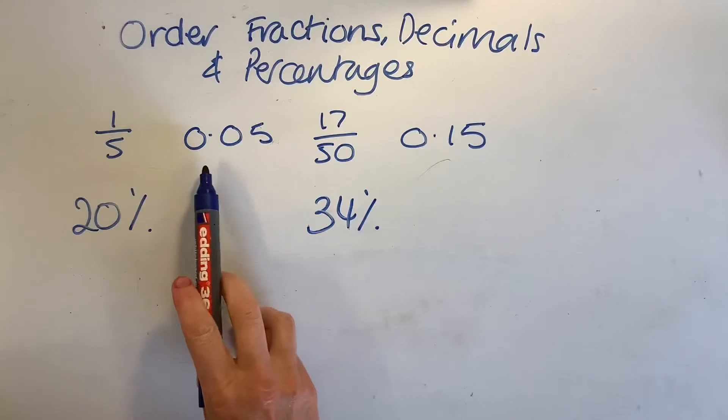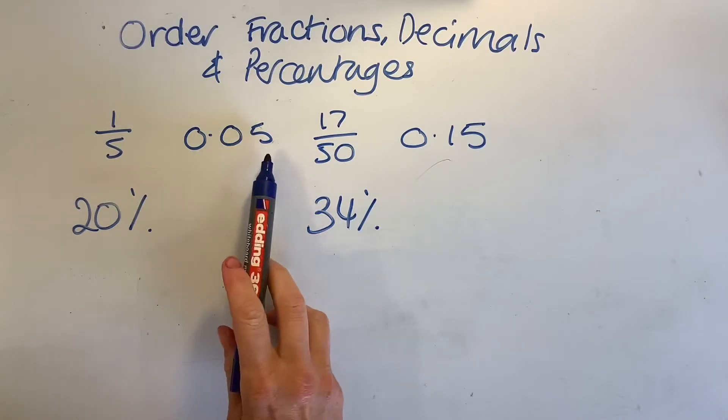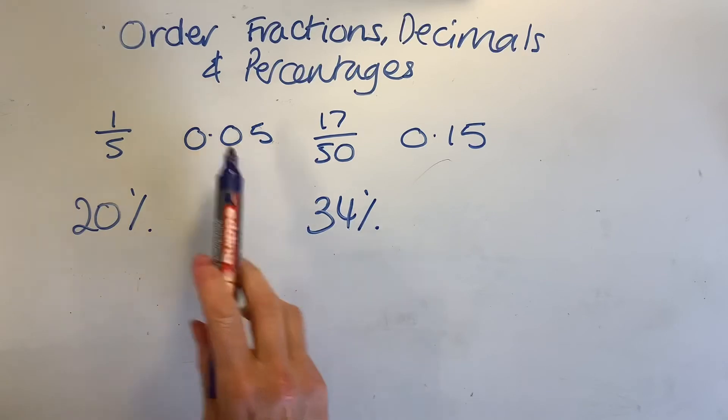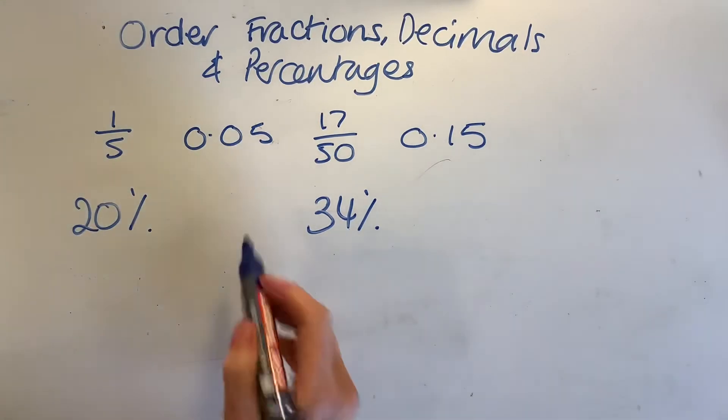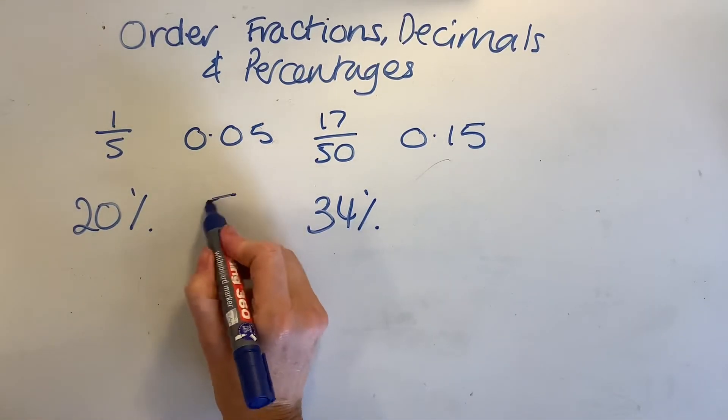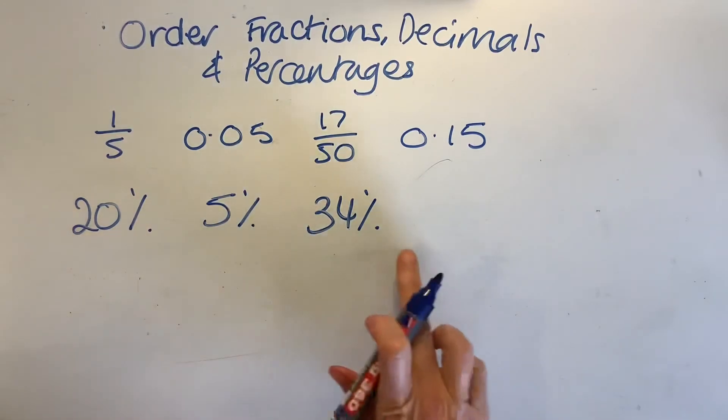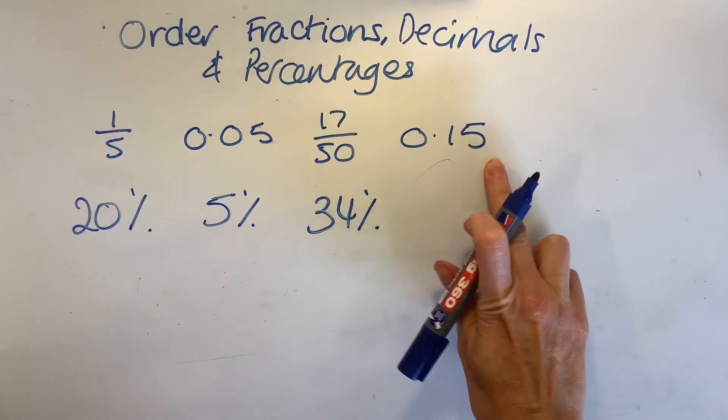So we need to know what is 0.05 as a percentage. Now I know what this is. This is 5%. And I know that this one is simply 15%.